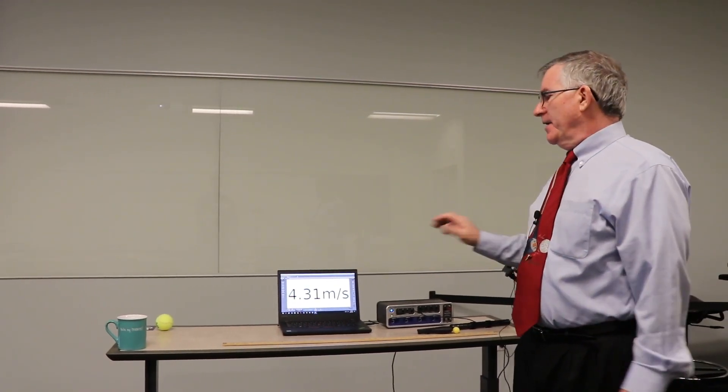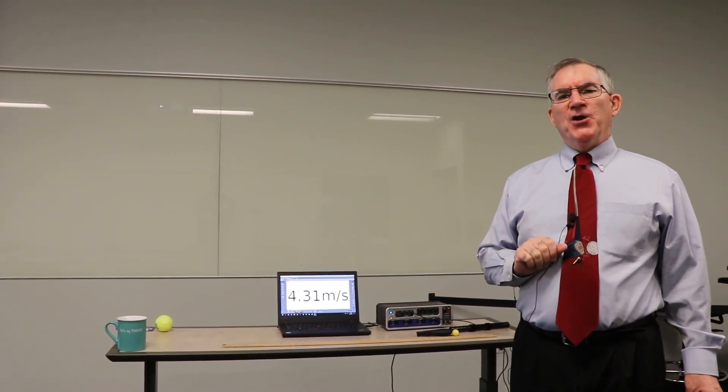So you see it came out at 4.31 meters per second. Now, you want to do that like three, well, four times is okay. Four or five times. And then average the number. So that's your V-naught. That's the speed it's being shot at.